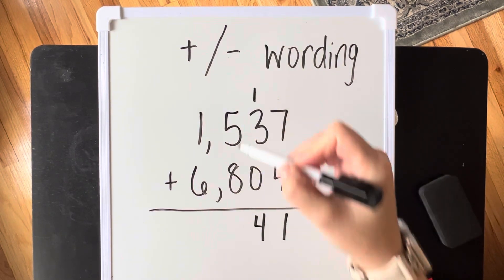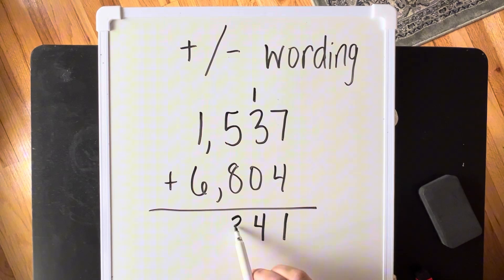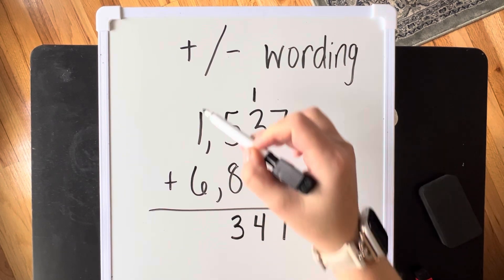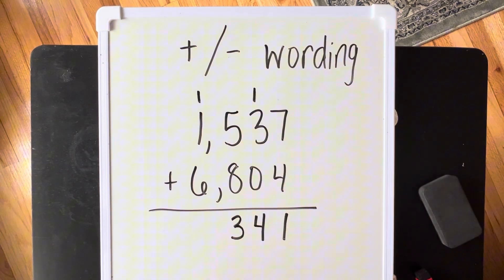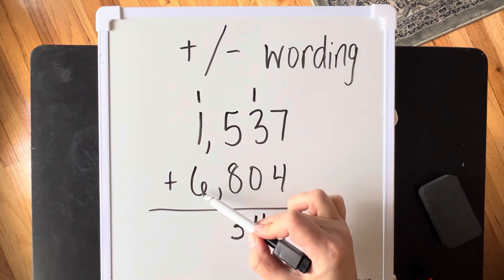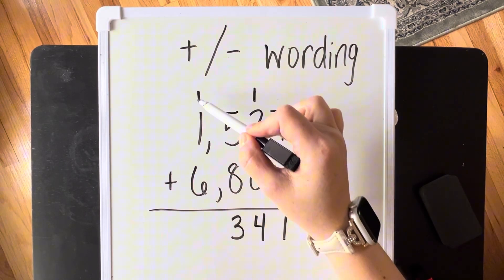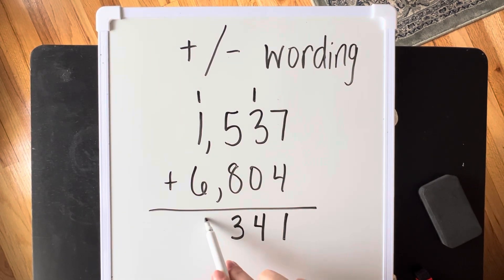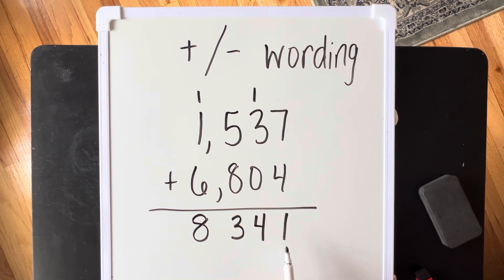8 plus 5 is 13. We put our 3 from our ones place down here and regroup our 10 into the next place value. 6,000 plus 1,000 and another is 8,000. And we are going to remember our comma.